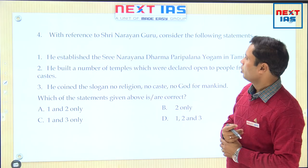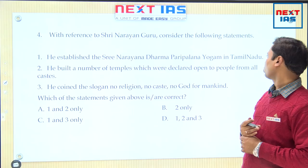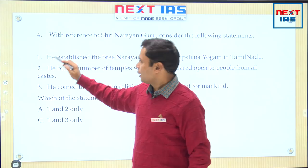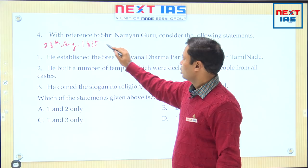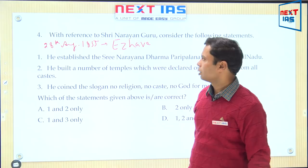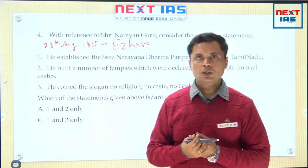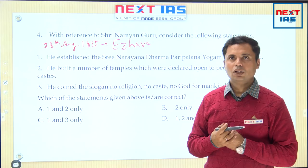Moving to the next question: with reference to Sri Narayan Guru, consider the following statements. He established the Sri Narayan Dharma Paripalan Yogam in Tamil Nadu; he built a number of temples declared open to people from all castes; and he coined the slogan 'no religion, no caste, no God for mankind.' Sri Narayan Guru was born on 28th August 1855 into a caste known in Kerala as the Ezhava caste — a great social reformer whose birthday is celebrated as Narayan Guru Jayanti.